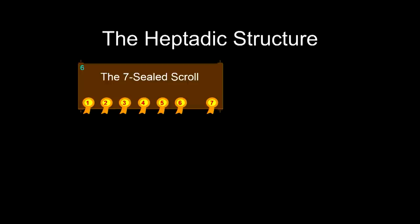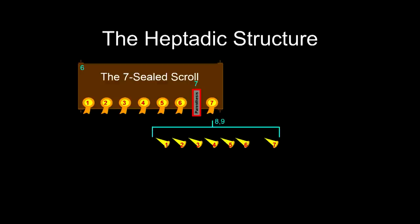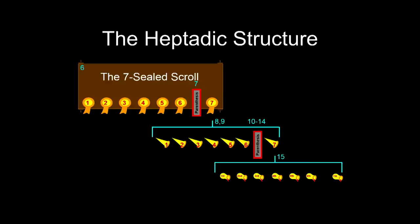We're going to open the seven sealed scroll — the title deed of the earth. In the pattern, there's always six things and then a change of subject — a parenthetical segment — before you get to the seventh. That occurs again when the seventh seal turns out to be seven trumpets. Chapters 8 and 9 take you through the sixth trumpet, and then chapters 10 through 14 are inserted as a parenthesis before dealing with the seventh trumpet, which yields seven bowls. There is an architecture to the whole book that's meaningful.